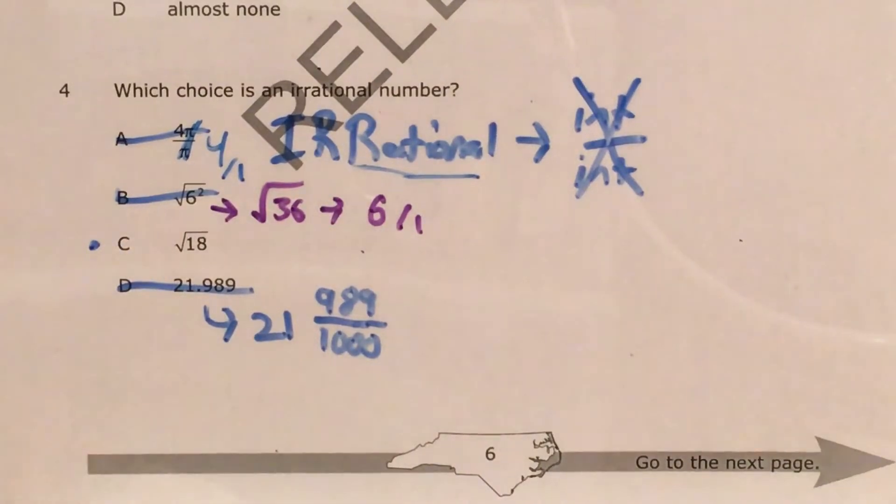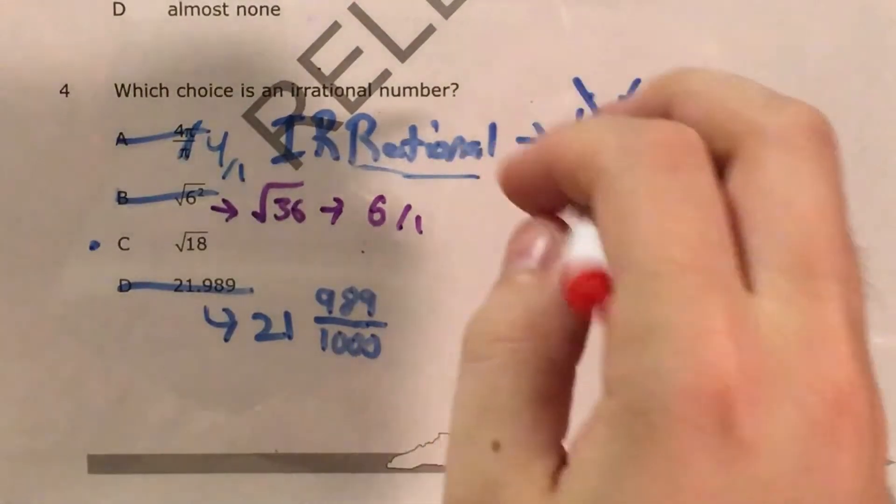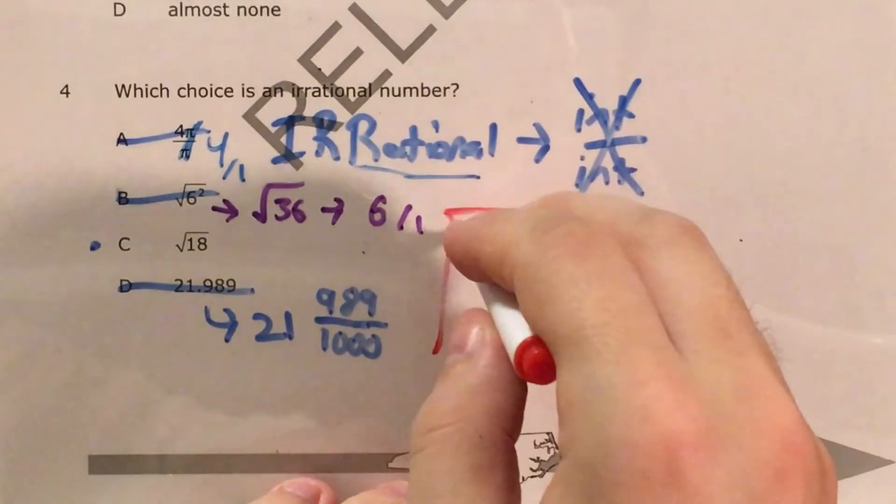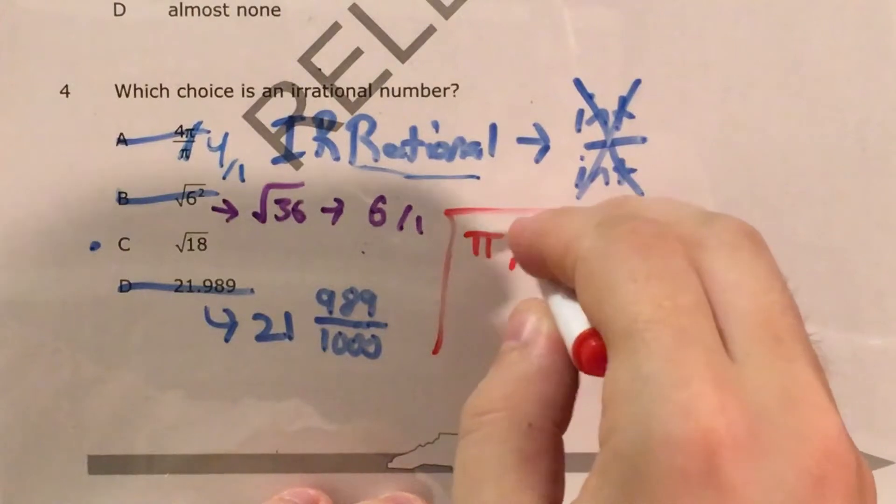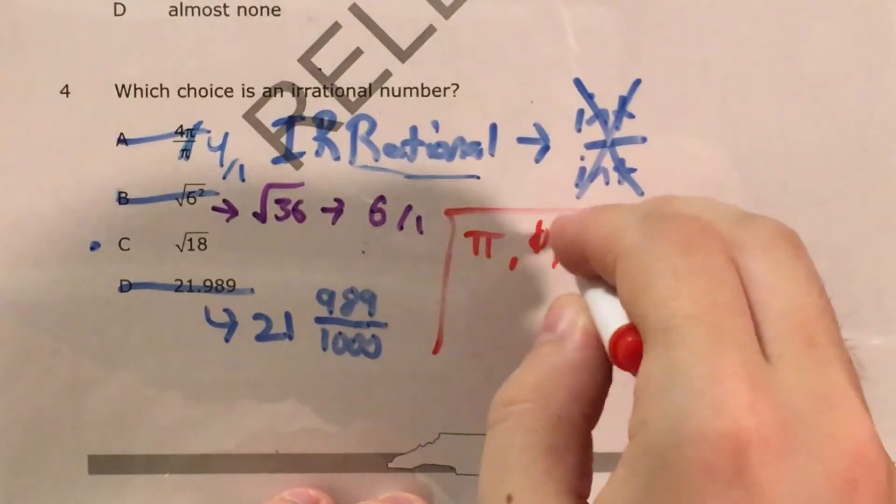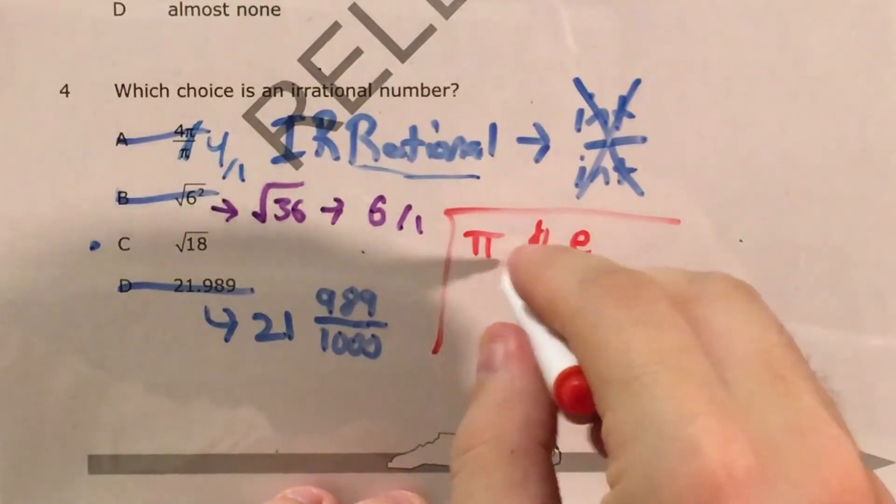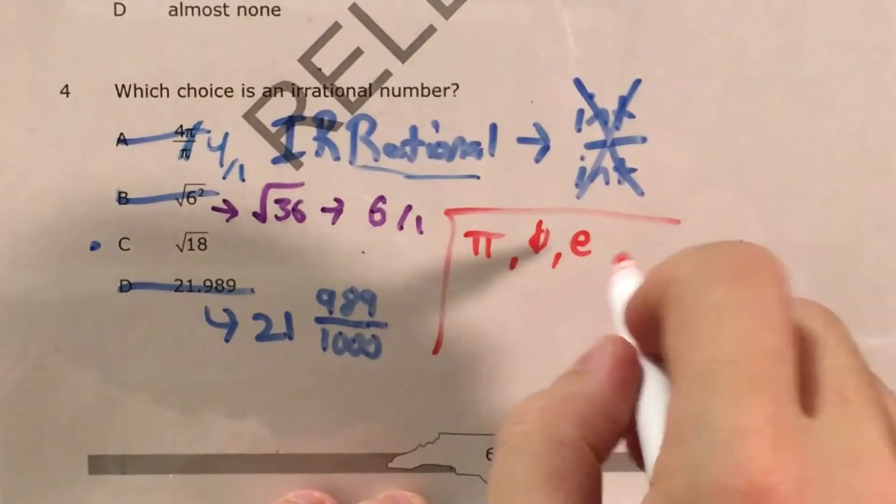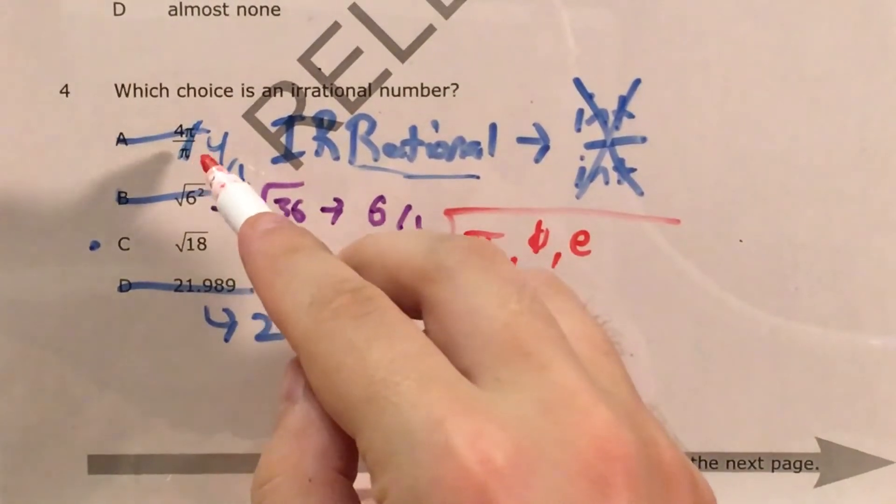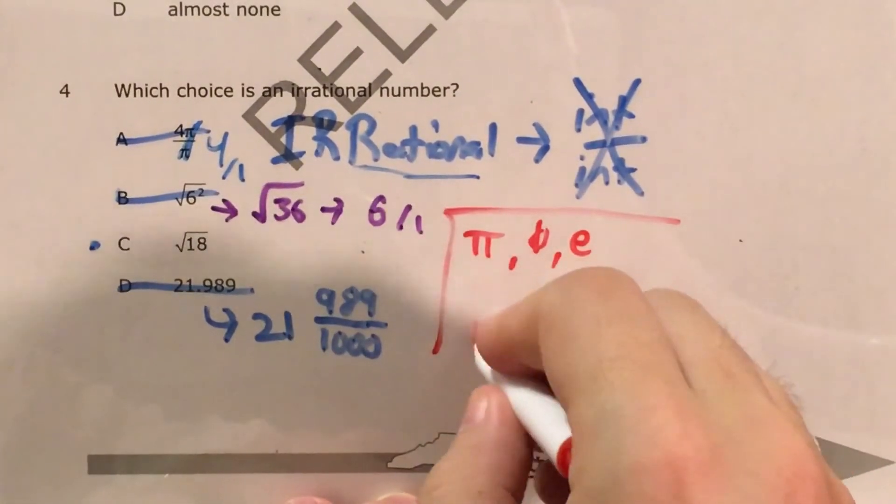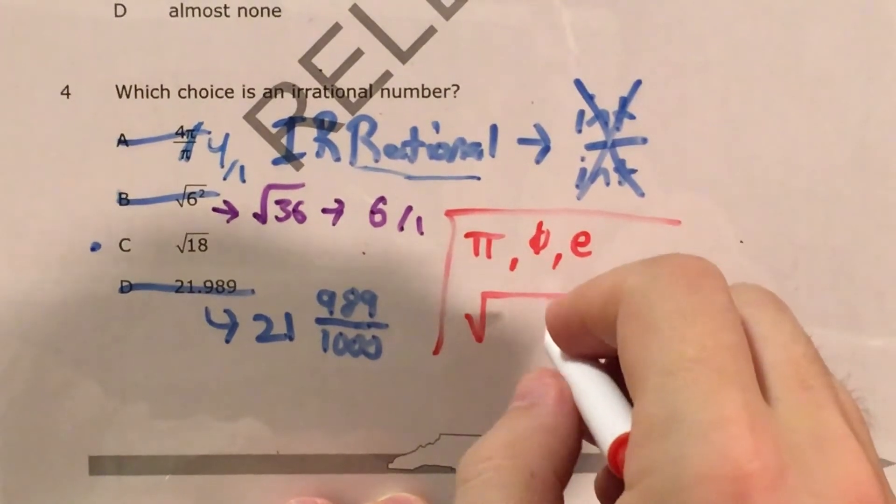Now we come to choice C, and this is where I want to get into the two most likely culprits of irrational numbers. The two biggest places you'll find irrational numbers are numbers like π. There's two that you'll come up with later on called phi and e. Most things involving any of these numbers are going to end up being irrational. Choice A wasn't, but that's only because we could divide π by itself. The other place is the square root.